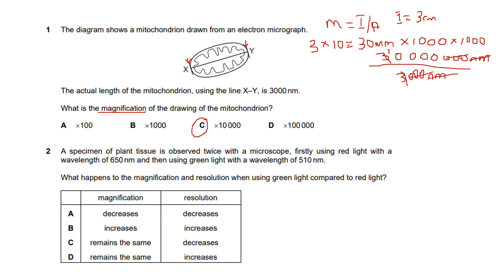Question two: a specimen of plant tissue is observed using red light at 650 nanometers, then green light at 510 nanometers. What happens to magnification and resolution when using green light compared to red light? Green light and red light offer different levels of visibility, but they cannot affect magnification — irrespective of wavelength, magnification stays the same. So options A and B are out, and our answer is either C or D.